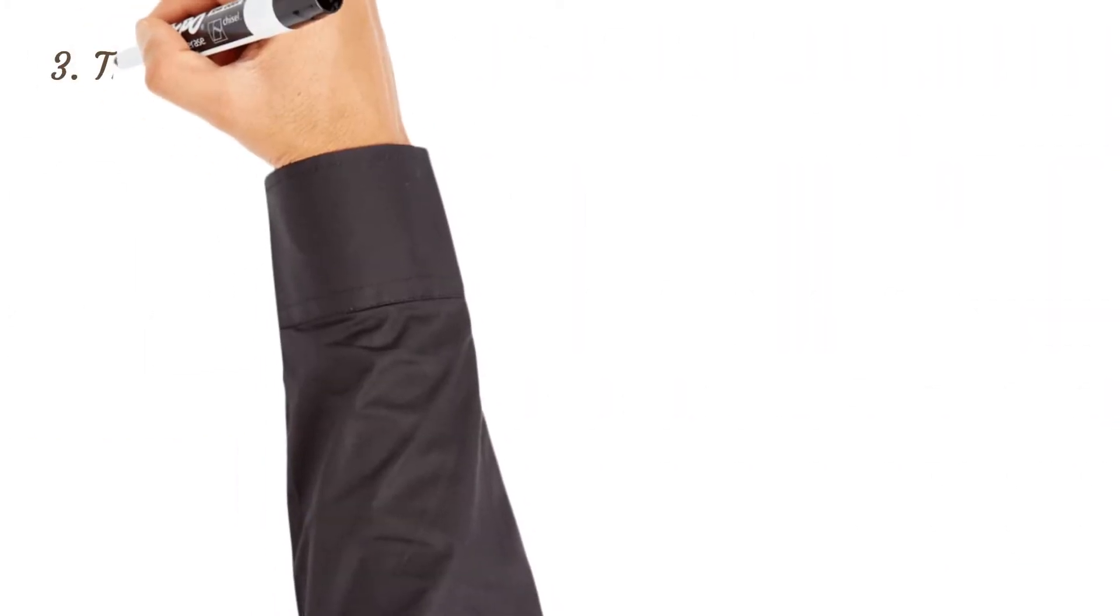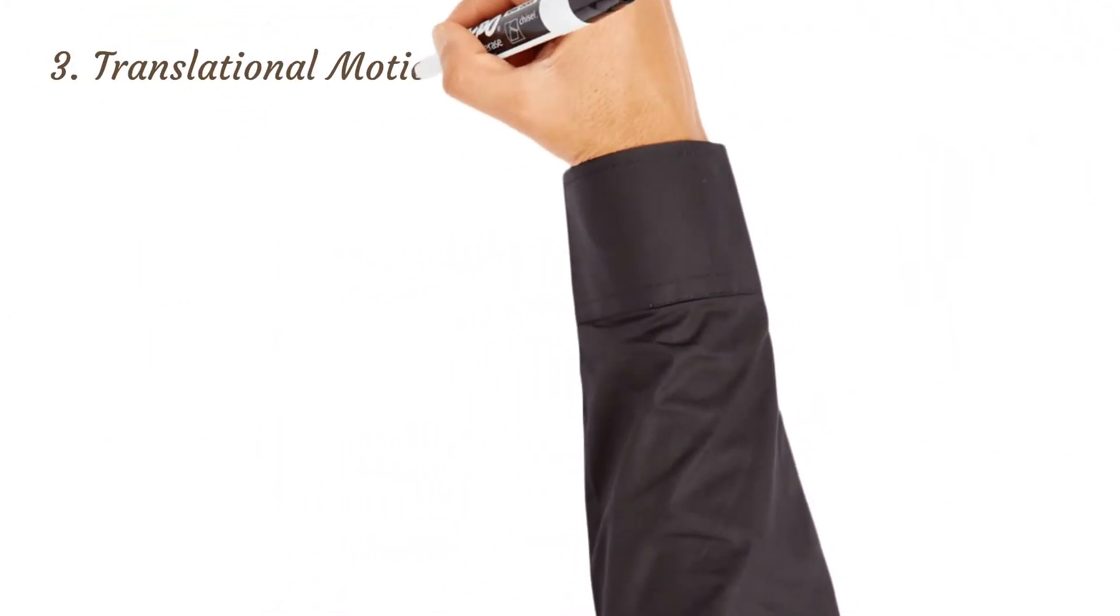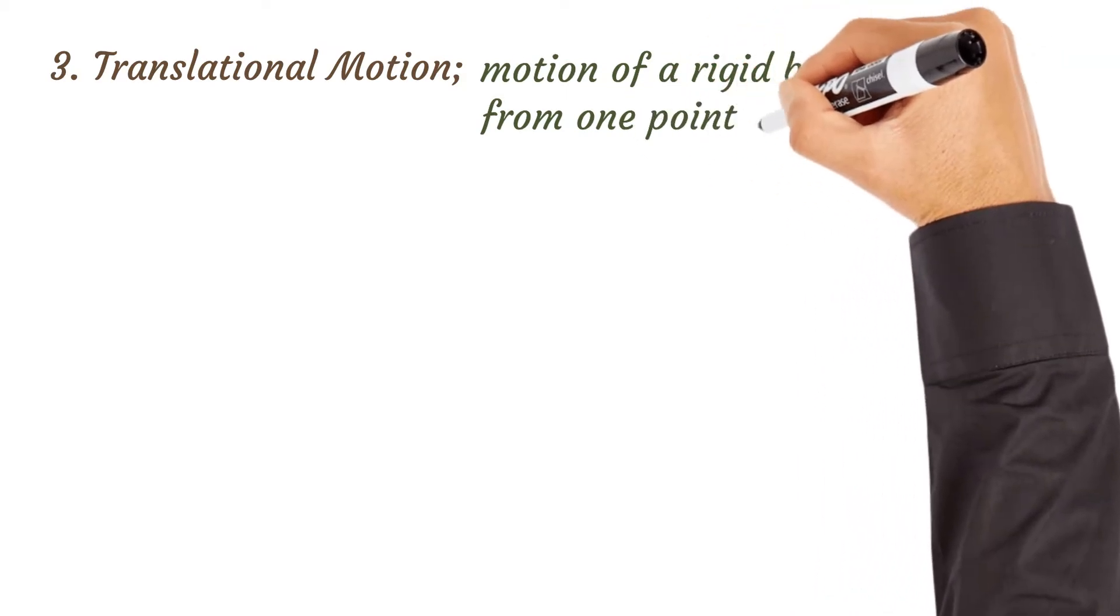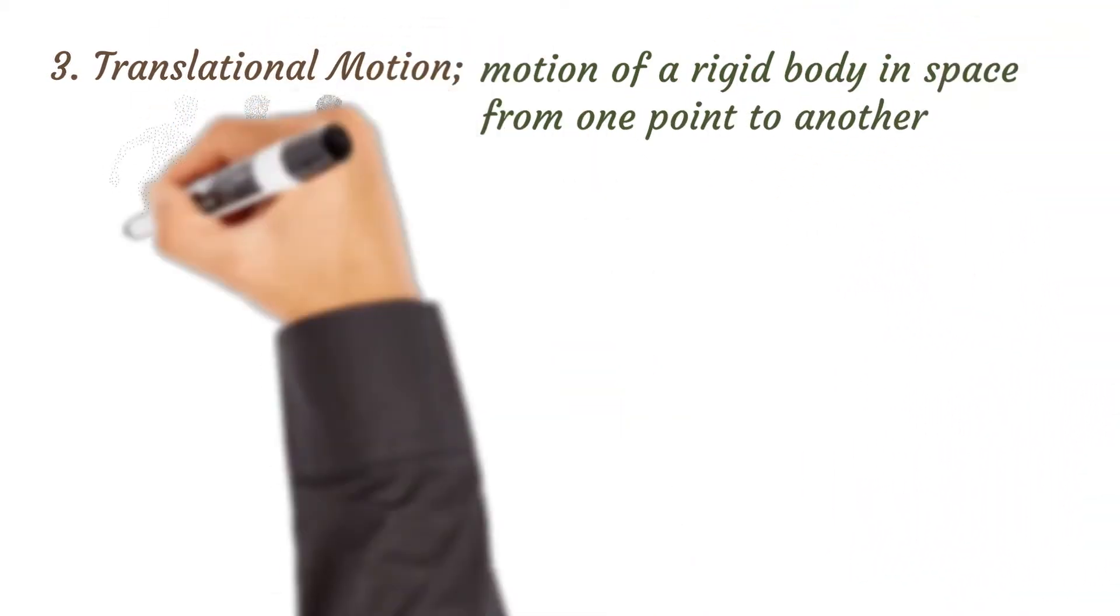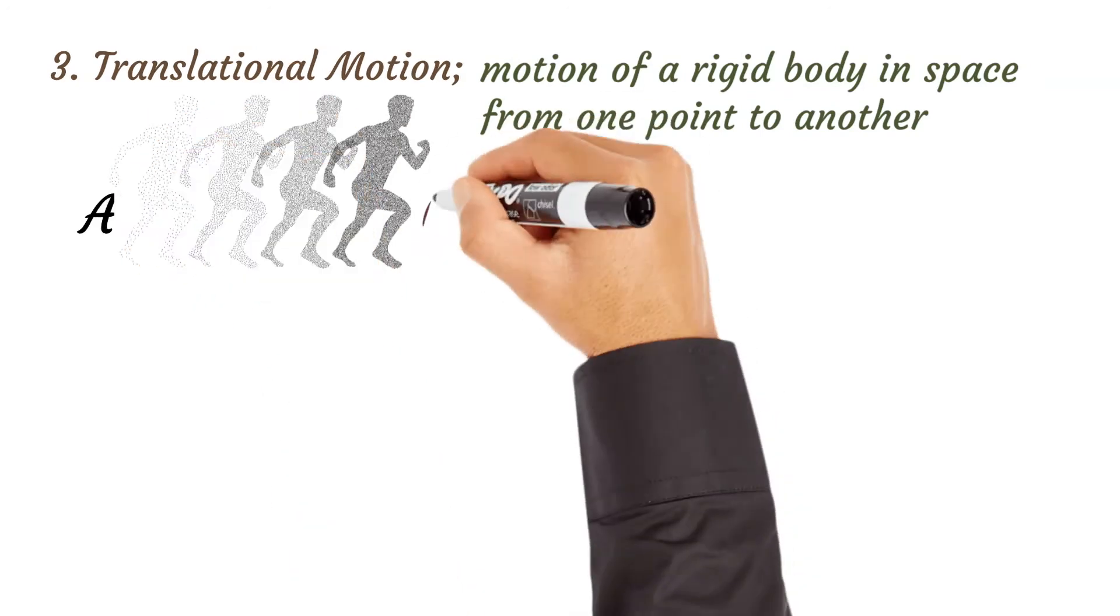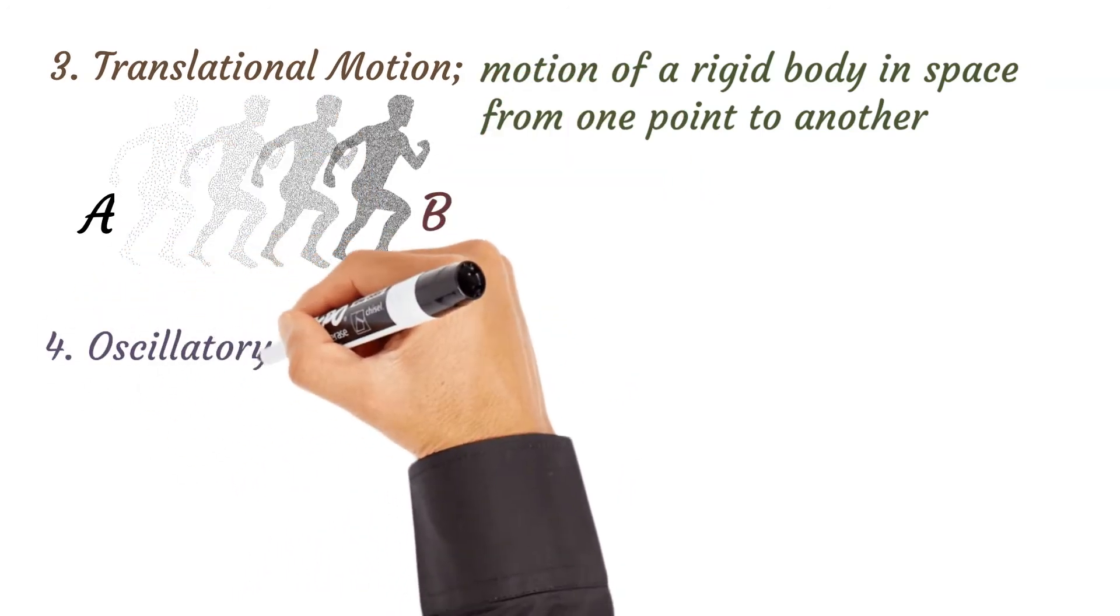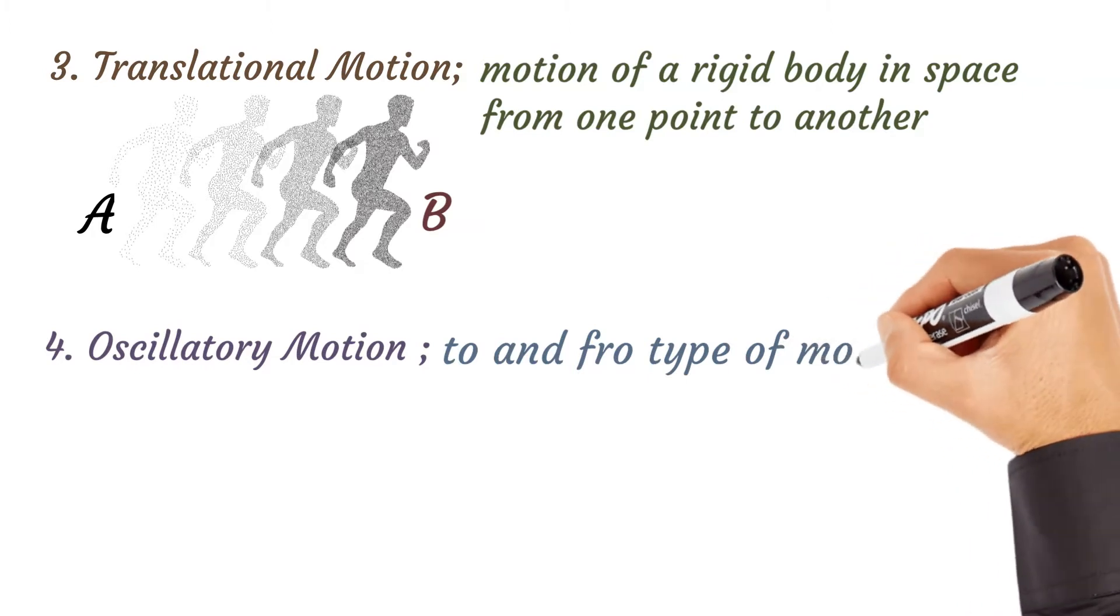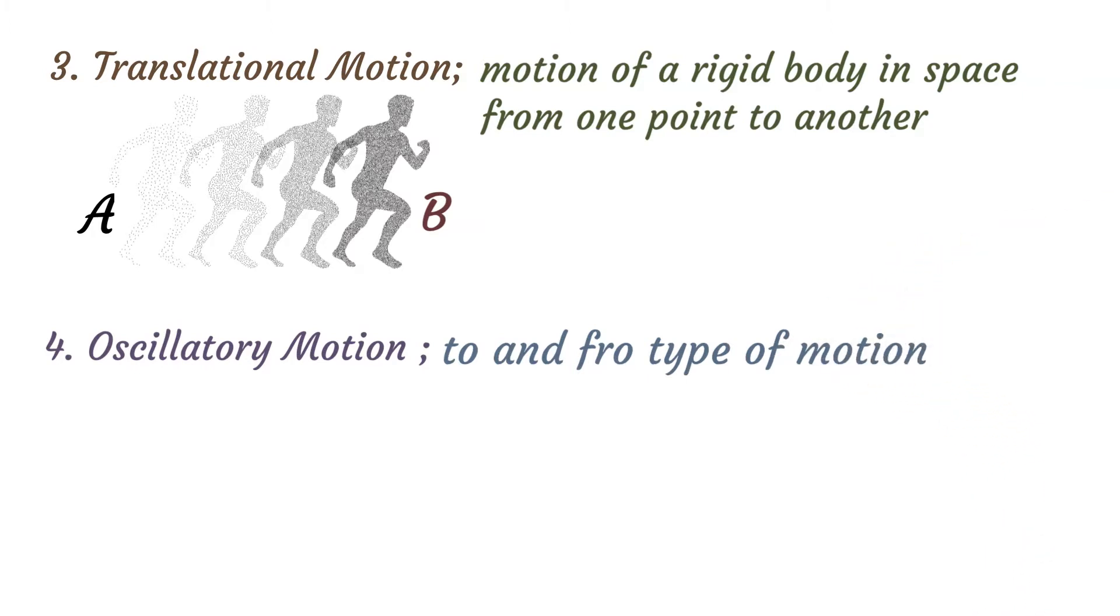Number three, translational motion is the motion of a rigid body from one point to another. So if a boy moves or runs from point A to point B, he is undergoing translational motion. Oscillatory motion is a to and fro type of motion that repeats itself after a certain period of time. When you swing a ball from left to right, it comes and goes back, that is oscillatory motion. For example, the motion of a simple pendulum.